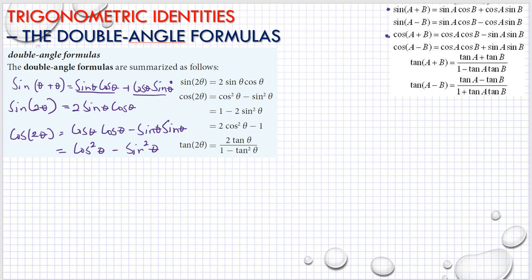We know that cosine²θ is also equal to 1 minus sine²θ. So, substituting, we have 1 minus sine²θ minus sine²θ, which gives us 1 minus 2 sine²θ.